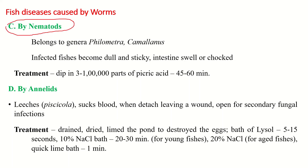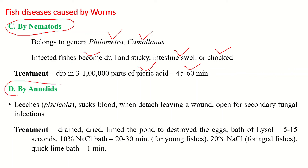Diseases caused by nematodes — common nematodes affecting tropical freshwater fish belong to the genera Philometra or Camallanus. Infected fishes become dull and sickly, and their intestine can be swollen or blocked by these nematode parasites. The treatment given for this type of disease is a dip treatment with picric acid for 45 to 60 minutes.